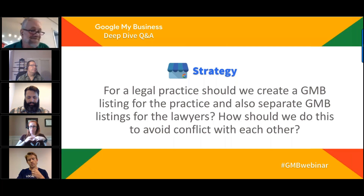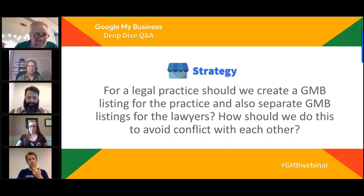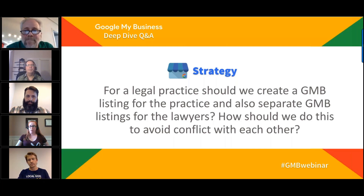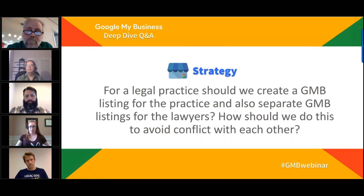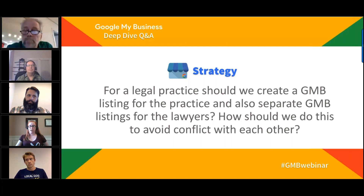Joy's rule: generally don't create more listings. Many lawyers don't realize they don't own the listings created for them — if a lawyer leaves the firm, they can take that listing, update the address, and the firm loses all associated reviews. It also splits reviews: it's usually better to have one profile with 100 reviews than four profiles with 25 each, which likely won't rank as strongly.